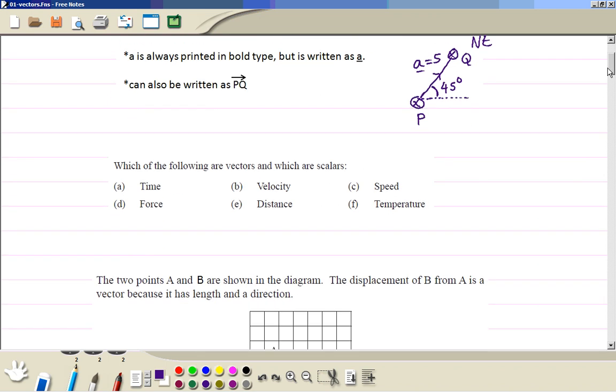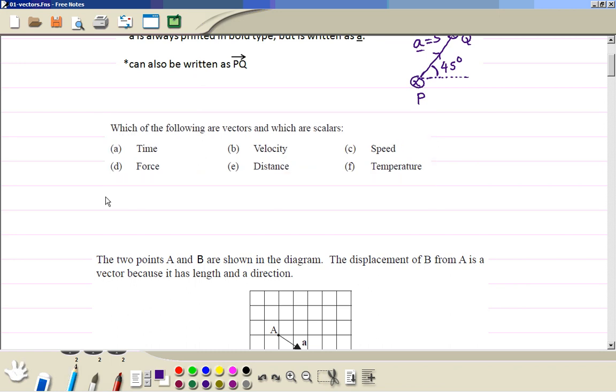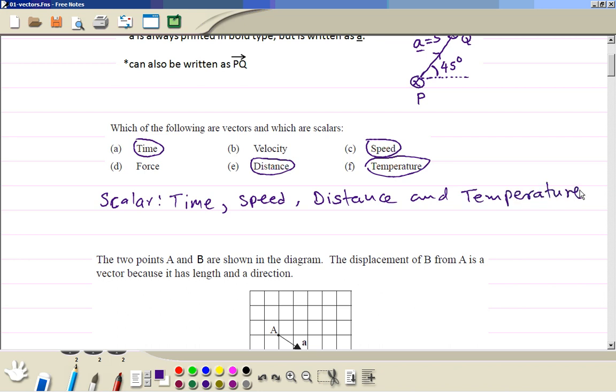Now we look at these quantities. We distinguish whether these are scalar or vectors. Time is a scalar quantity, then speed, because it has only magnitude, so speed, distance, and temperature. So these are the scalar quantities.